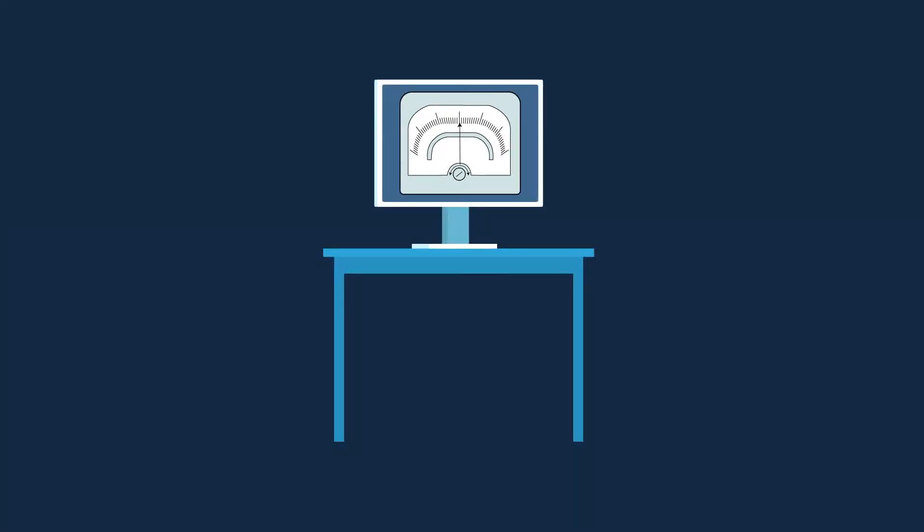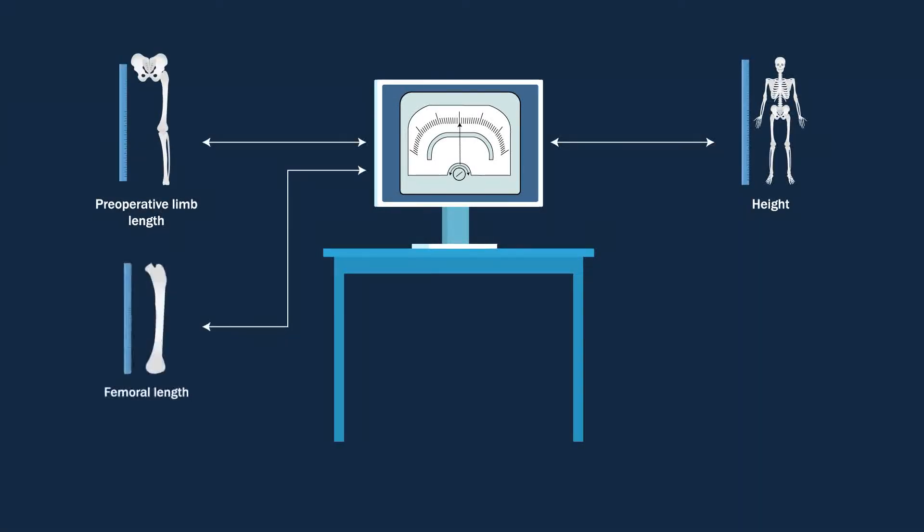Once the absolute critical lengthening values were obtained, they were analyzed against various anthropometric values, such as height, preoperative limb length, femoral length, and body mass index, to find any possible correlations.